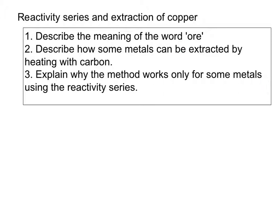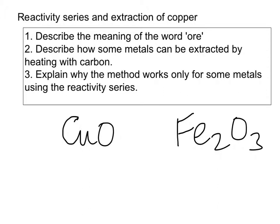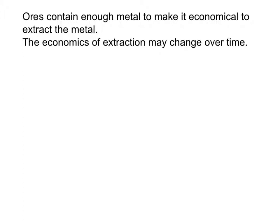When we say heating the metal ore with carbon, we actually mean its oxides — the metal ores get purified and we end up with oxides such as copper oxide and Fe₂O₃, which is iron oxide. This lesson mainly focuses on extraction of copper from copper oxide; extraction of iron will be covered in a later lesson on iron and steel.